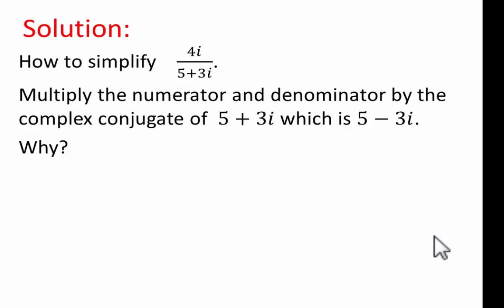So the first thing we need to do is to be able to get rid of the imaginary expression in the denominator. So what we do is we multiply this fraction by the conjugate of the denominator. If you've got 5 plus 3i, its conjugate would be 5 minus 3i. So let's go ahead and multiply.